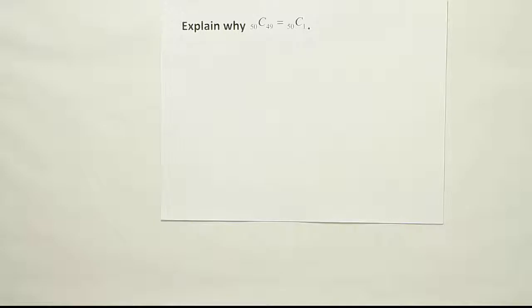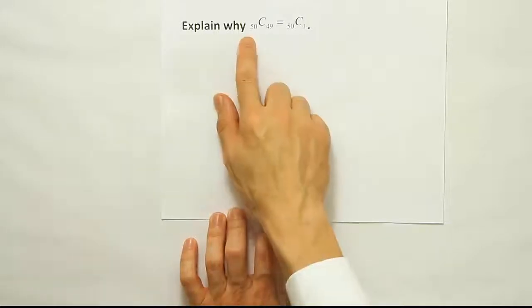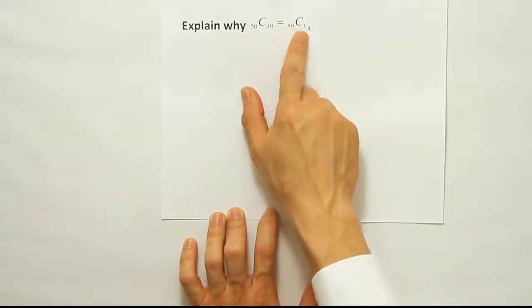What we want to do is think about it from a counting point of view, from a combinatorics approach. Why would out of 50 things choosing 49 things be the same as out of 50 things choose 1?